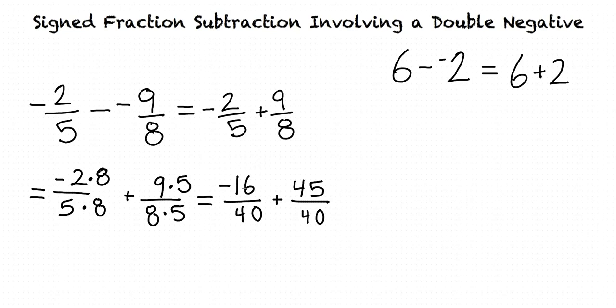our fractions are negative 16 fortieths plus 45 fortieths. Now that our two fractions have the same denominator, we can finally add them by keeping the same denominator and adding the numerators. In this case, negative 16 plus 45, which equals 29 fortieths.